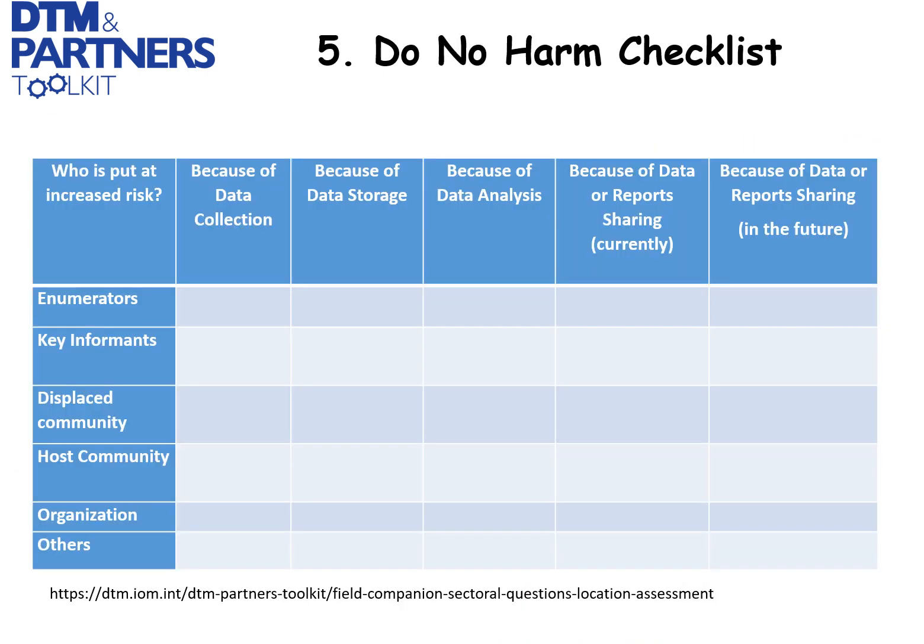The Do-No-Harm checklist is a very useful tool that enables anybody who is designing and organizing a data collection exercise to ensure that the exercise does not do harm to the enumerators, the informants or respondents, the communities being assessed, the organization itself, or anybody else. It considers harm that could result from data collection, but also from data storage, analysis, or sharing.